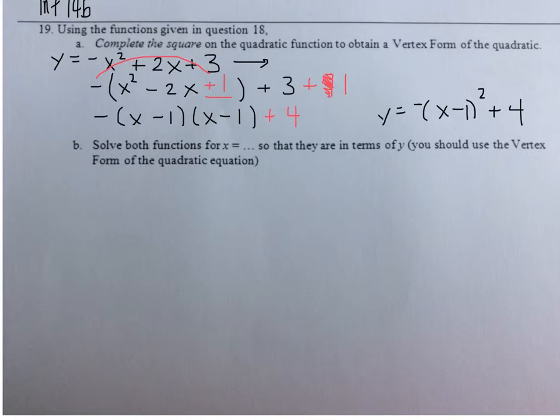Now in part b, we need to take not only this new vertex form that I have, but I also need to take the other equation. So that's given in question 18. I'm just going to rewrite it here. The line, negative x plus 3. For both of them, we want to solve them so that they're x equals, in other words, so that they are in terms of y.